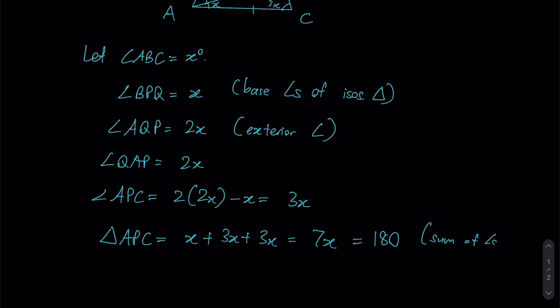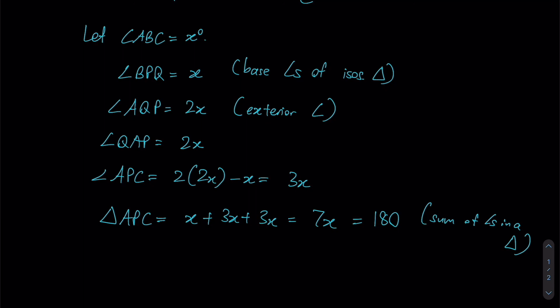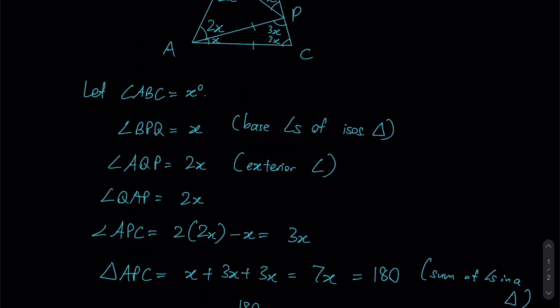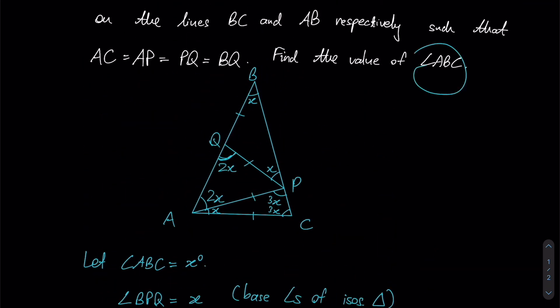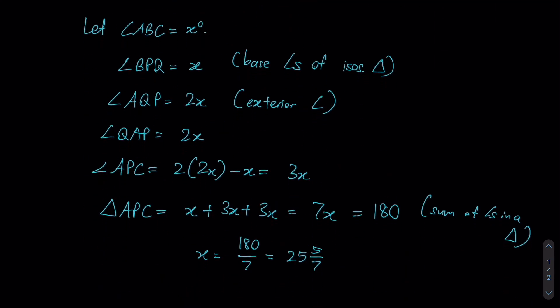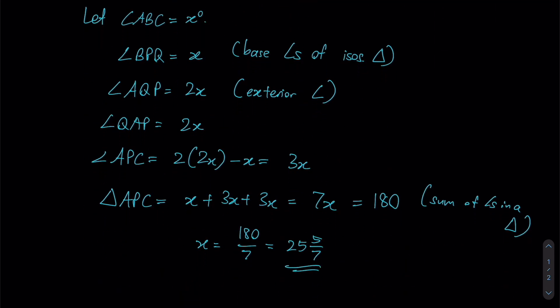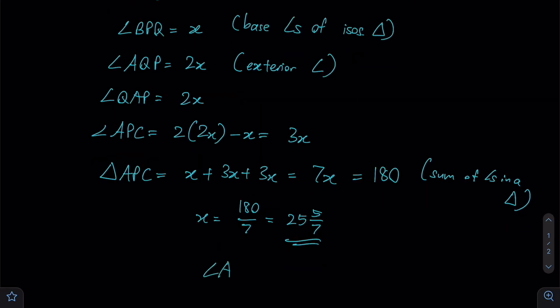This is sum of angles in a triangle. So if 7x is 180, then x must be 180 over 7, which would give us 25 and 5/7 degrees. Let's go back to the question. They are indeed looking for the value of ABC, which we let be x from the start, and therefore this value here is just our answer. So angle ABC is 25 and 5/7 degrees. This here will be our final answer.